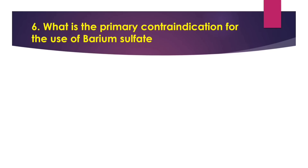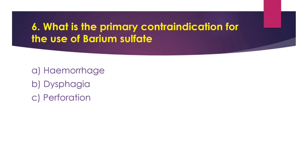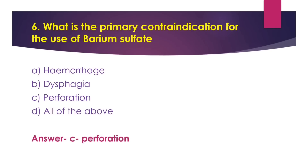Question number 6: What is the primary contraindication for the use of barium sulphate? Option A hemorrhage, option B dysphagia, option C perforation, and option D all of the above. The answer is option C, perforation. Perforation is the primary contraindication for the use of barium sulphate.